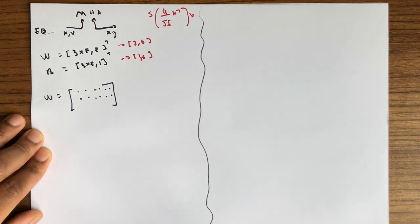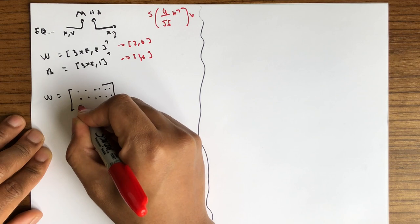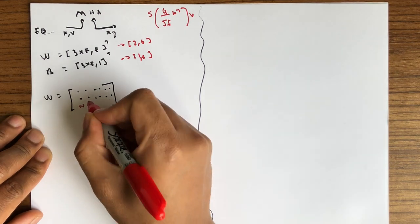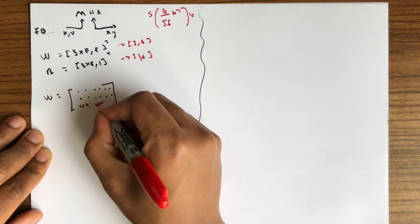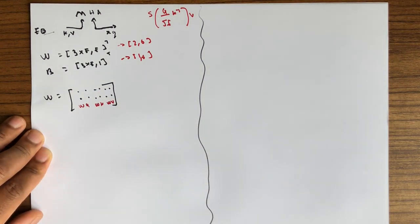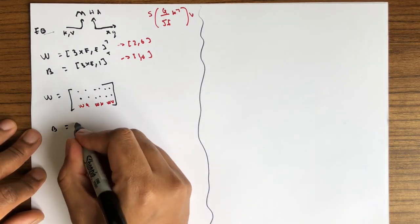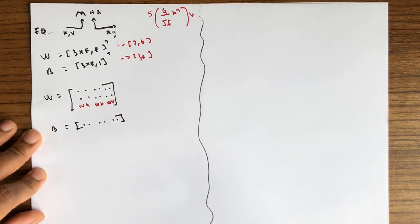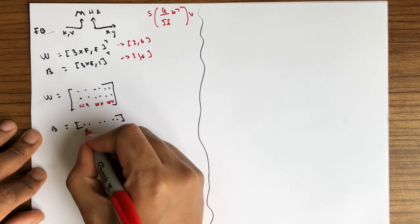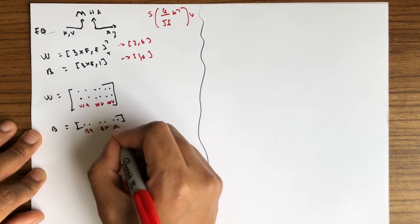This part is the W related to query, this is W related to key, and this is the W related to V. Let's also see b — this is the b related to query, b related to key, and b related to V.